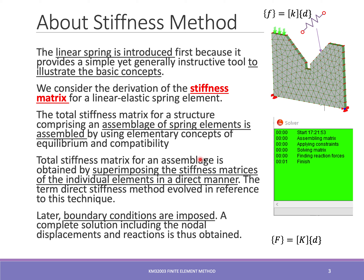The total stiffness matrix for an assemblage is obtained by combining or superimposing the stiffness matrices of the individual elements using direct methods — just adding or subtracting them. After assembling all the matrices, we apply the boundary conditions to the assembled equations. The steps are: first model into a finite element model, then represent every element with a stiffness matrix, assemble all matrices, apply constraints, then solve simultaneously to find forces and complete the analysis.